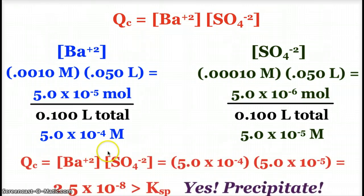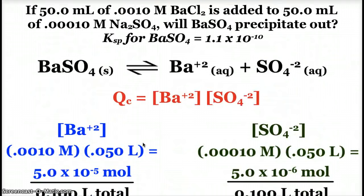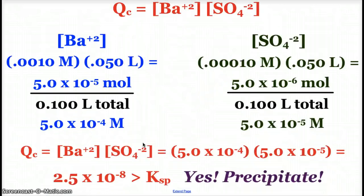And so when we do plug it in, we get 2.5 times 10 to the negative 8th, which is greater than the KSP that was given to us, 1.1 times 10 to the negative 10. So again, yes, a precipitate would form.